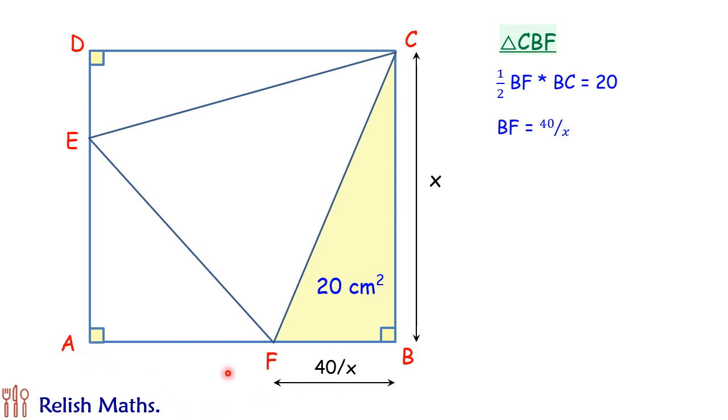But full length AB is x. So AF will be x minus 40 by x. So this length is x minus 40 by x.